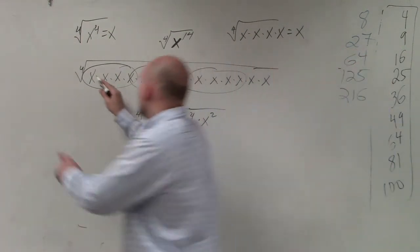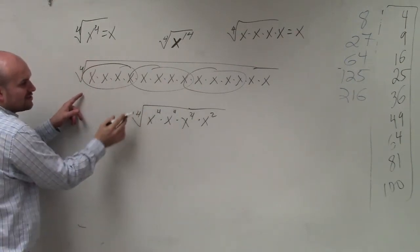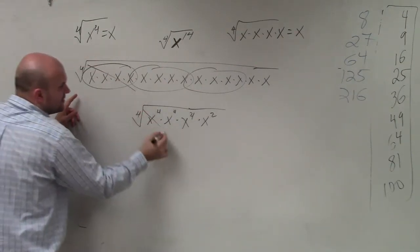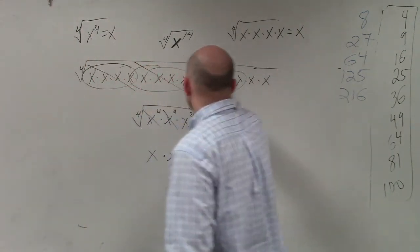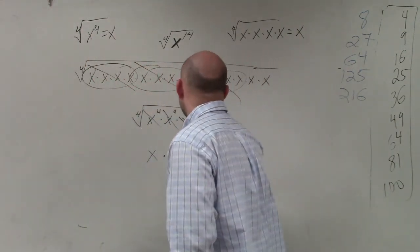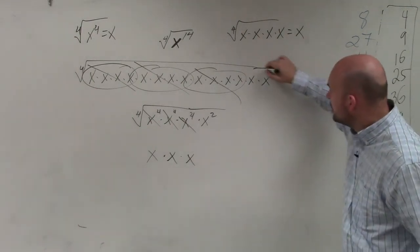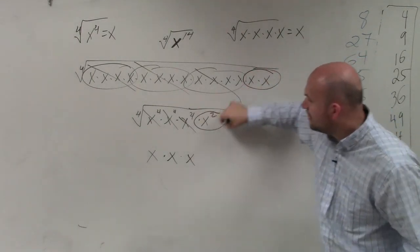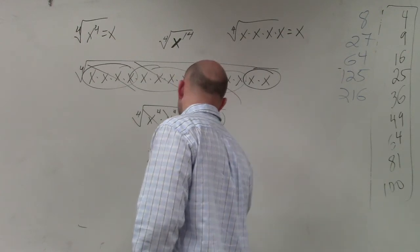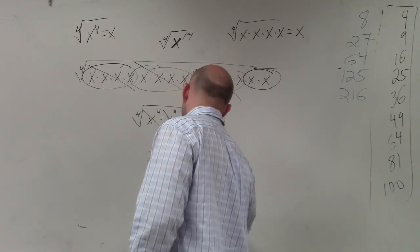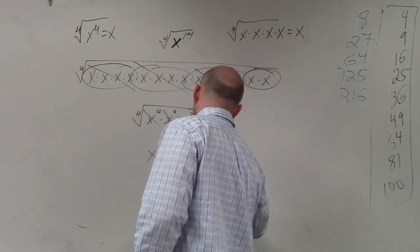So the 4th root of 4 x's or the 4th root of x to the 4th is just x. x. And then what are you left with under the radical? x squared. So therefore, I rewrite 4th root of x squared. So my final answer is x cubed 4th root of x squared.